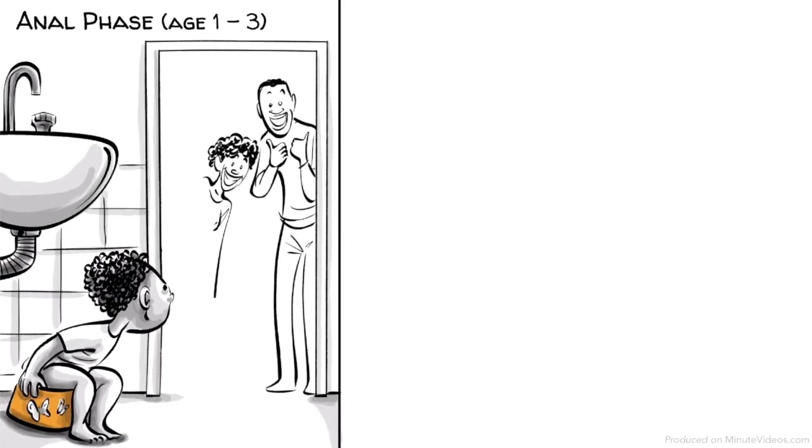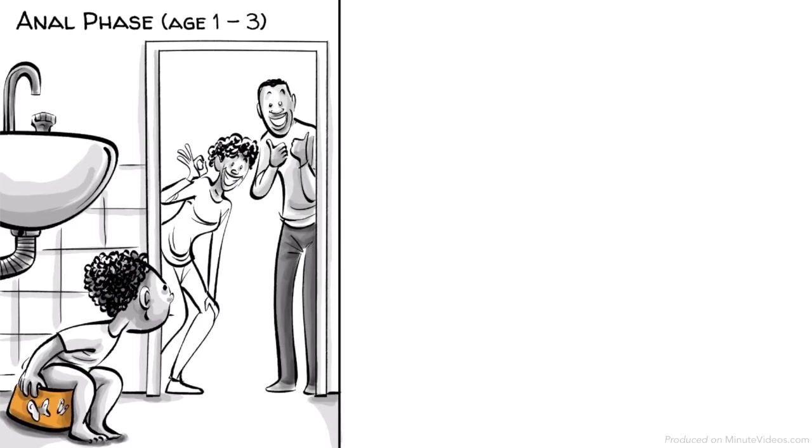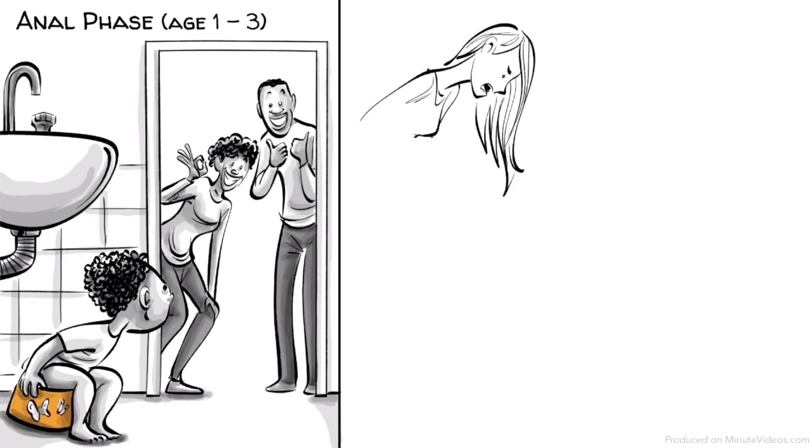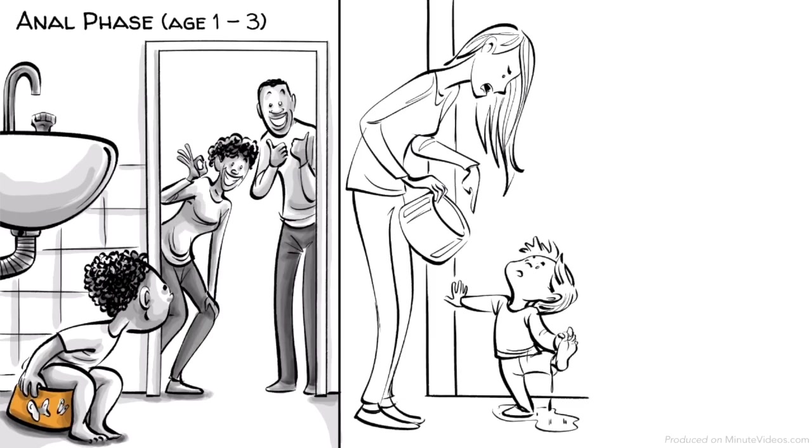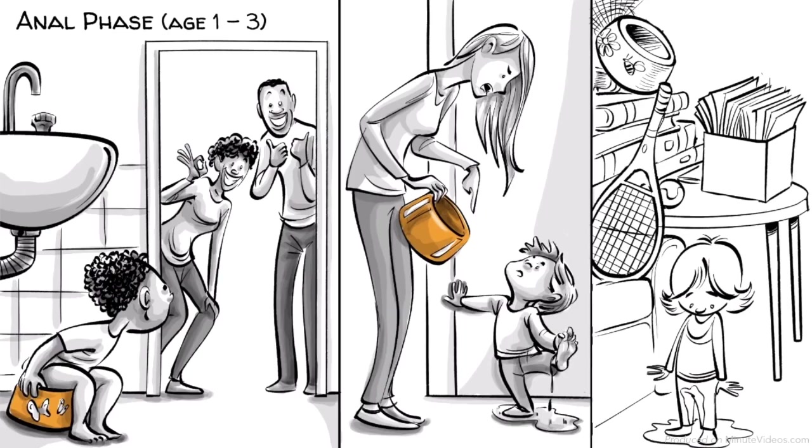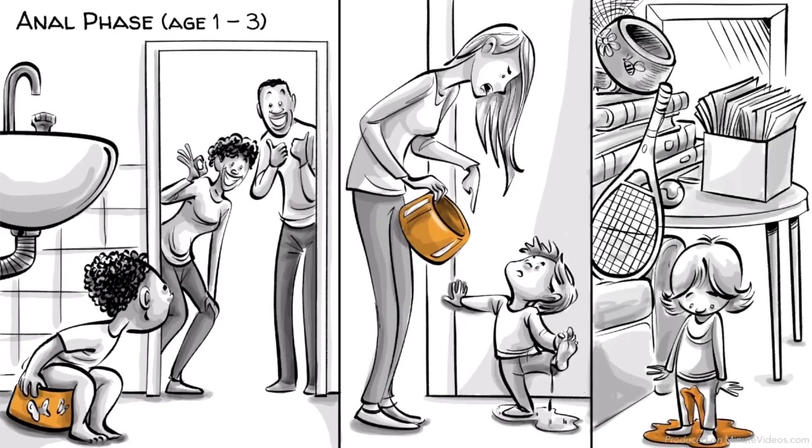Hans' parents praise his attempts to use the toilet and encourage him to learn at his own pace. Ernst's parents force potty training on him too early and punish him for mistakes. Ida's parents neglect any efforts at potty training entirely.